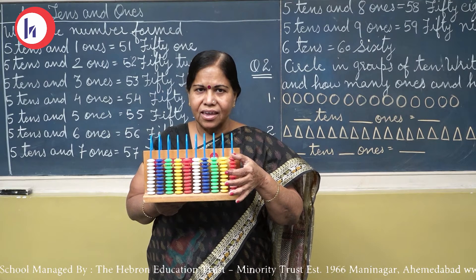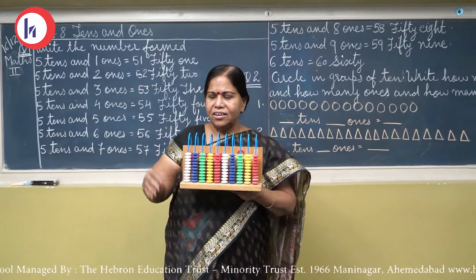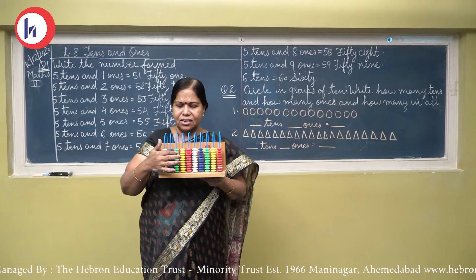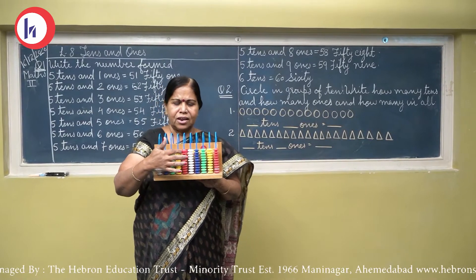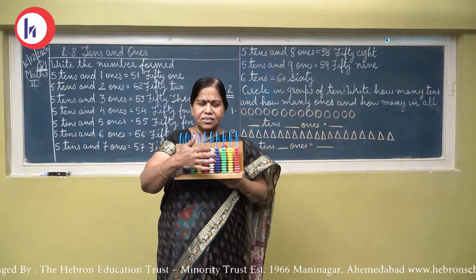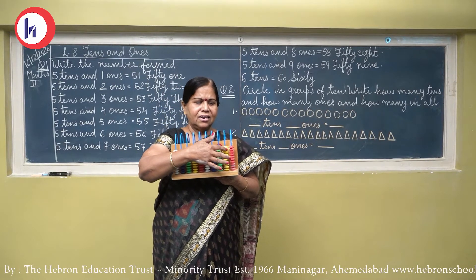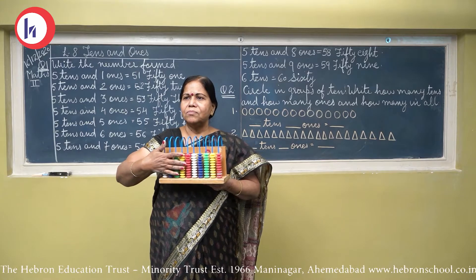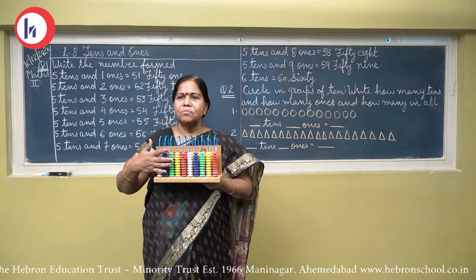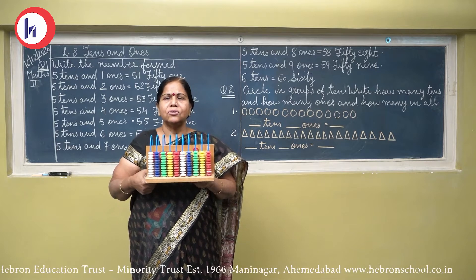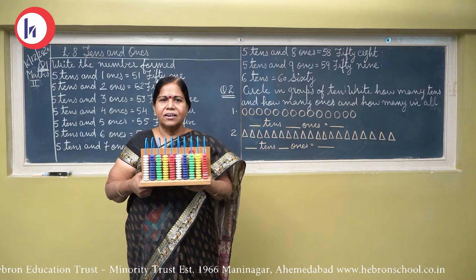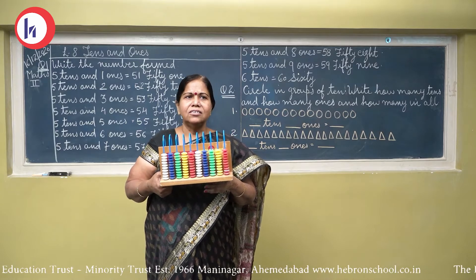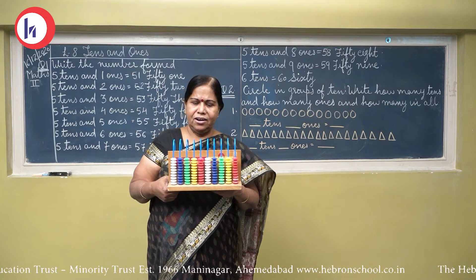Now 1 more 10. So 10, 20, 30, 40, 50, 60, 70. 1 ten, 2 tens, 3 tens, 4 tens, 5 tens, 6 tens, 7 tens. And 7 tens means 70. Now 1 more 10 again — 80. Now 1 more 10 again — 90.